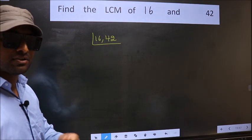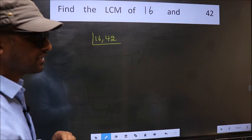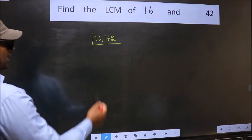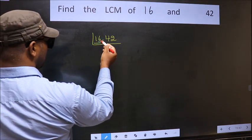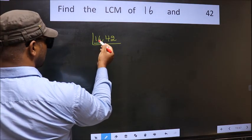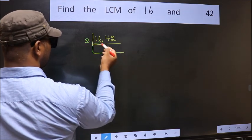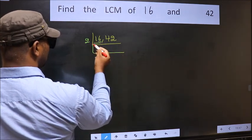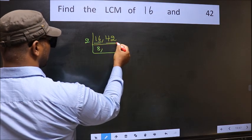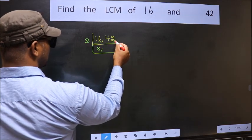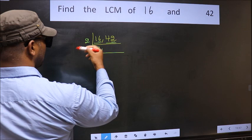Now you should focus on the first number which is 16. For this number, last digit is 6, so take 2. When do we get 16 in the 2 table? 2, 8, 16. The other number 42 — last digit 2 — so this is also divisible by 2.